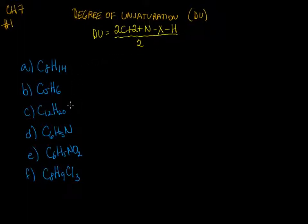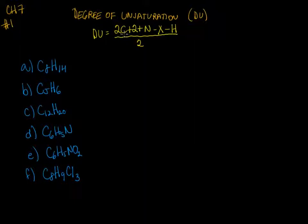I'll show you how to do this, and after a while you'll get the hang of it. I suggest that after you think you have the hang of it, press pause on the video and calculate the rest of the degrees of unsaturation, then compare with the numbers I come up with. The number of carbon atoms is plugged into C, the number of nitrogen atoms into N, and so on — just follow the formula.